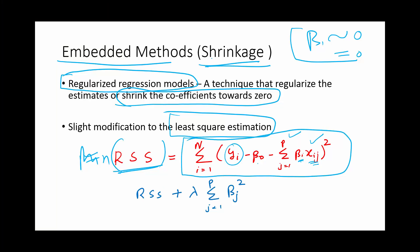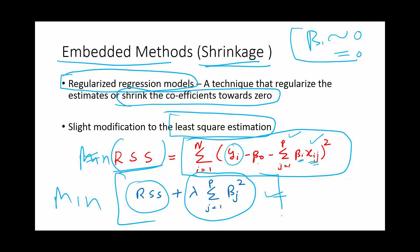In the embedded method, you just add another term to the RSS. So the RSS is computed as normal in least squares estimation, but in the shrinkage method, we add another term to the RSS and then minimize the whole thing.